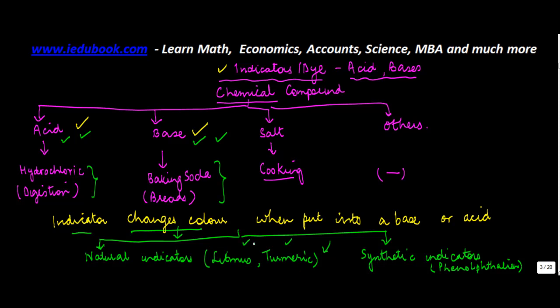To summarize: an indicator or dye is used to test whether a compound is an acid or a base. Different chemical compounds react differently to indicators, and based on that, one can identify whether it is an acid or a base. Indicators are of two types: natural indicators like litmus or turmeric, and synthetic indicators like phenolphthalein.